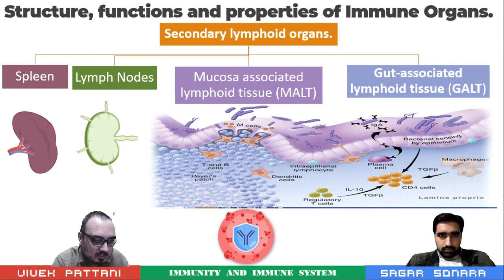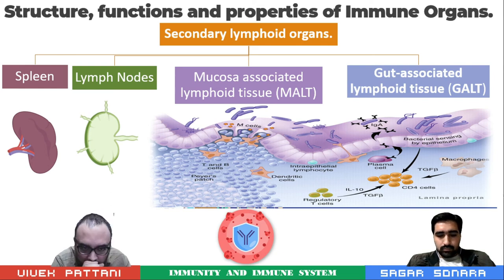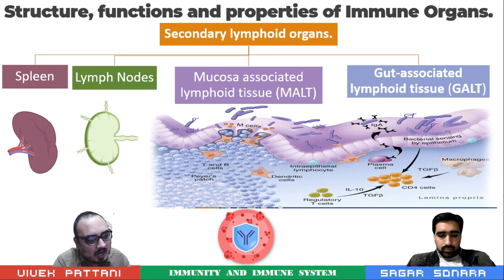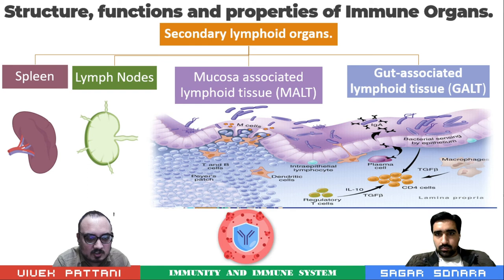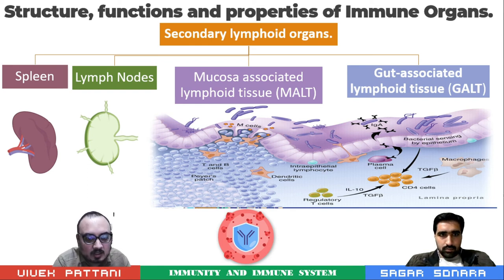The spleen is the largest secondary lymphoid organ, divided into two compartments: central white pulp and outer red pulp. White pulp has two parts — peri-arteriolar lymphoid sheath, also known as T cell area, and the marginal zone, known as B cell area. The red pulp contains sinusoids filled with RBCs, where older and defective RBCs are destroyed.